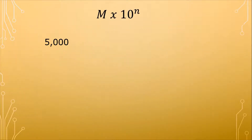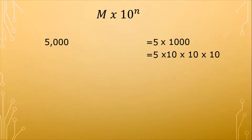For example, we have 5,000. In 5,000, it is equal to 5 times 1,000, or 5 times 10 times 10 times 10, meaning we multiply 5 by 10 three times. If we're going to write that into scientific notation, our exponent is equal to the number of places we moved.